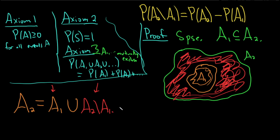So note, these are mutually exclusive events. If you take the intersection here, it's the empty set, right? So note, A1 and A2 minus A1 are mutually exclusive because their intersection is empty. So we can apply axiom 3.